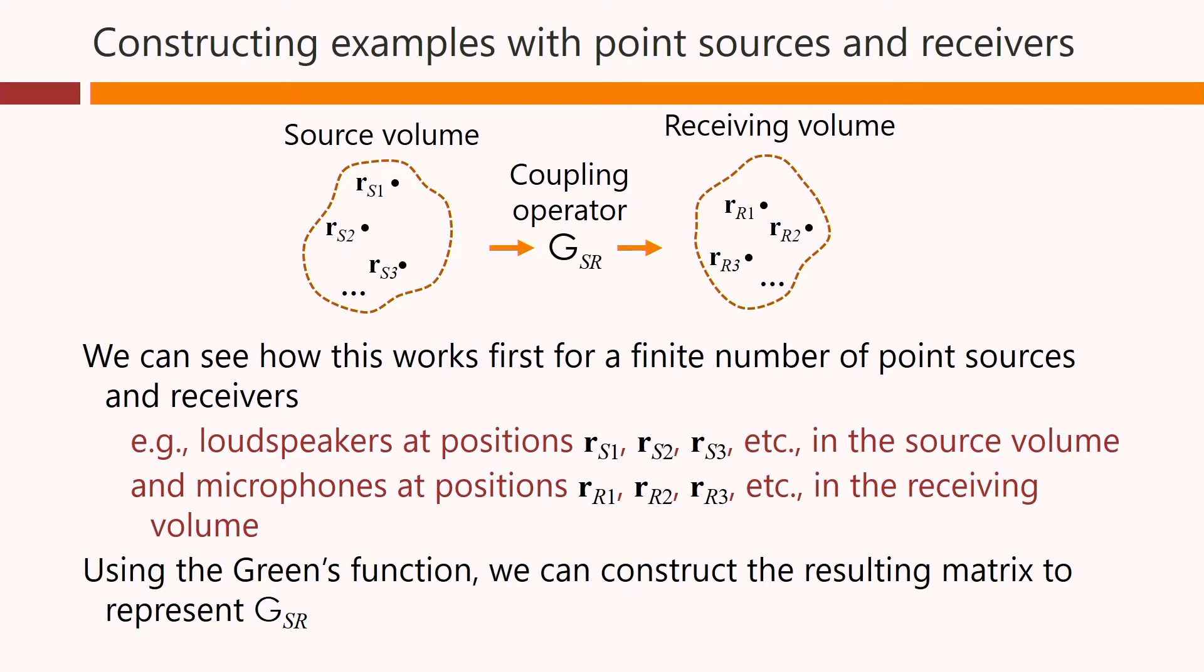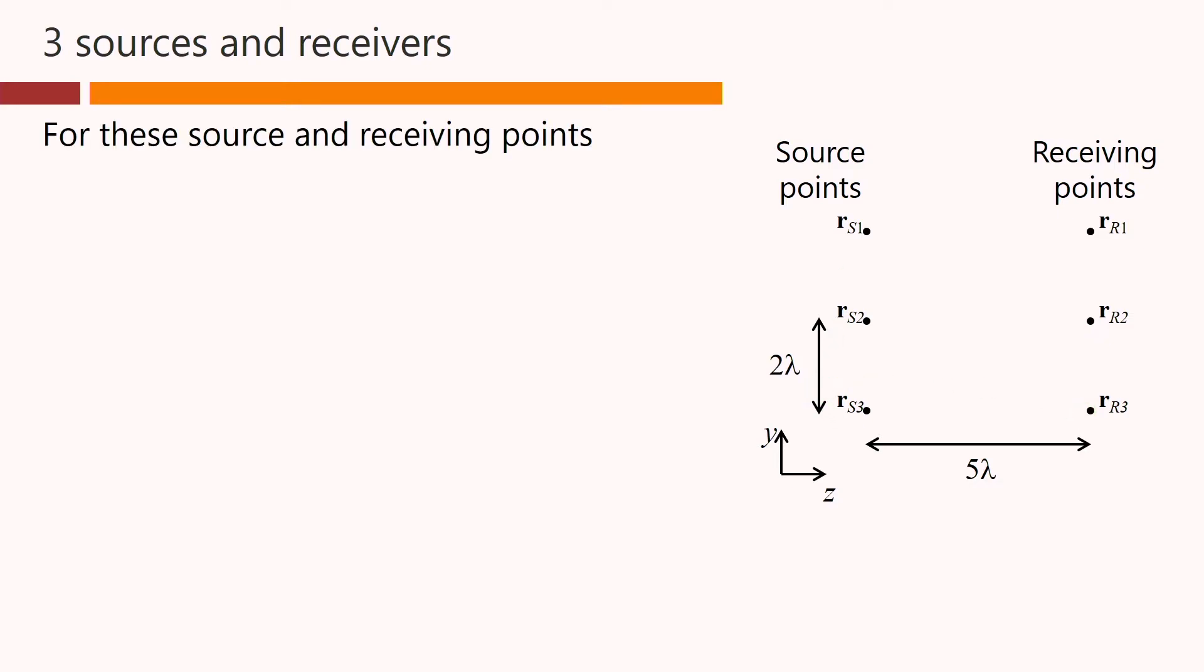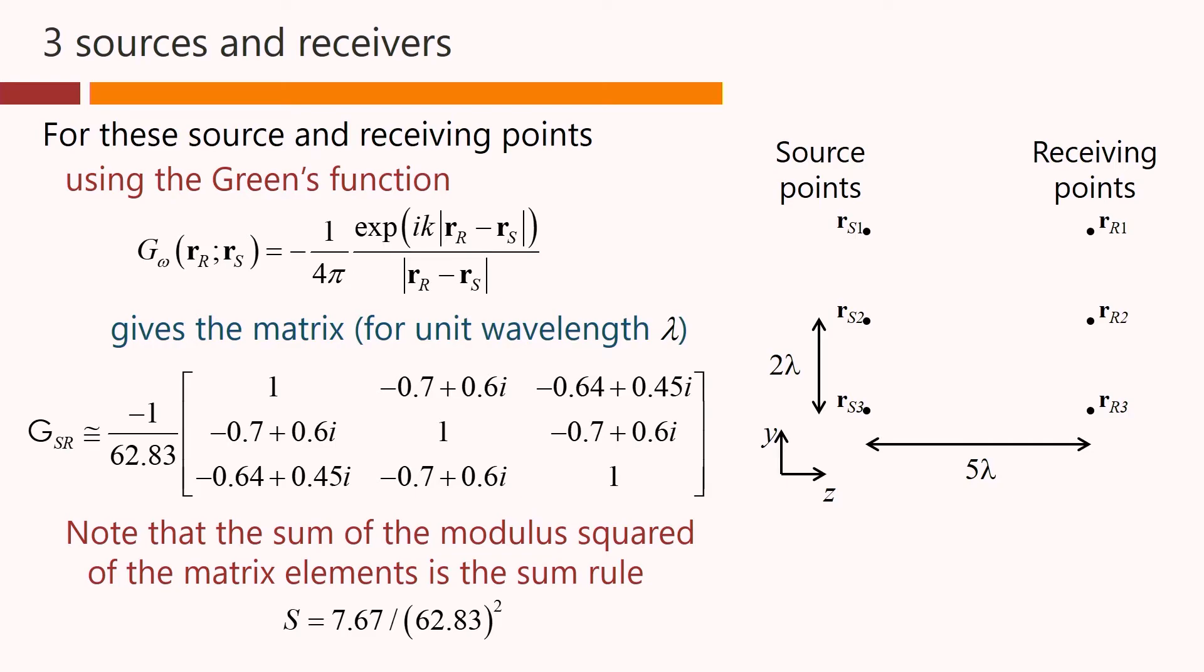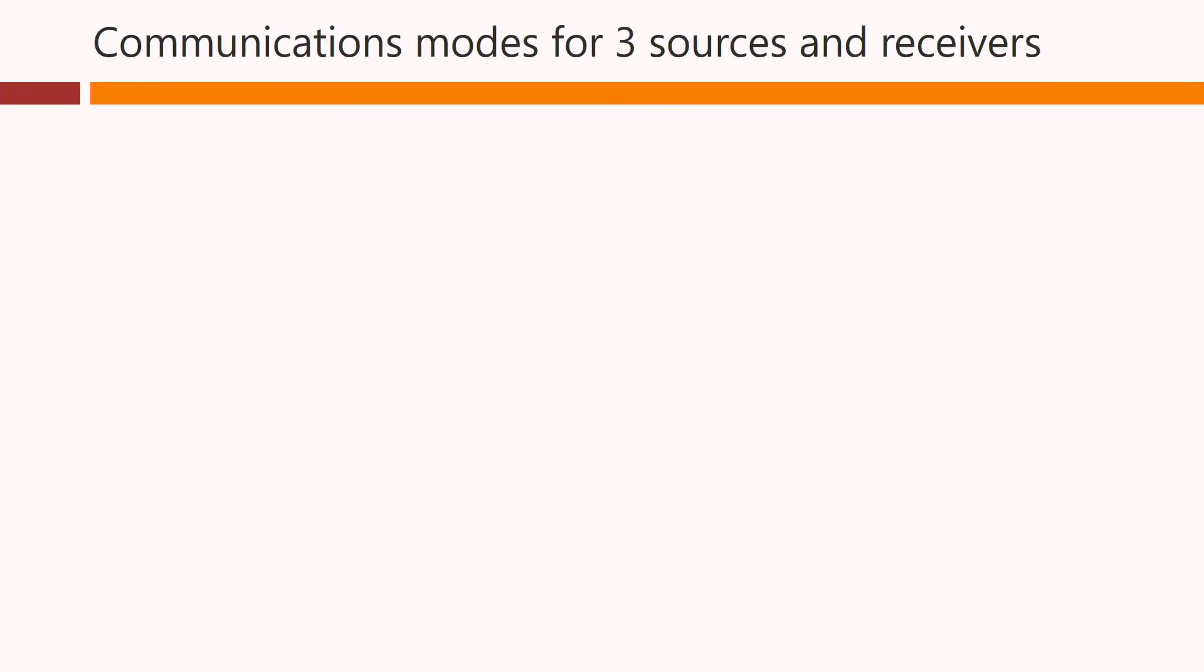Using the Green's function, we can construct the resulting matrix to represent G_sr. So let's consider three sources and receivers. A set of source points, which we could think of as loudspeakers, a set of receiving points, which we could think of as microphones. There's some separation between them. Here we've chosen that as just five wavelengths, and the sources themselves and the receiving points are separated just by two wavelengths. For these source and receiving points, then we can simply use this Green's function to calculate all the matrix elements. It's straightforward. And that gives a matrix that looks like this, presuming unit wavelength for simplicity here. This contains all the coefficients, coupling the source points to the corresponding receiving points. Note incidentally that the sum of the modulus squared of the matrix elements, in this matrix, is the relevant sum rule here. So we get a specific answer for that, a specific number.